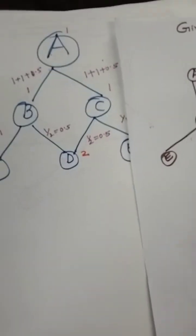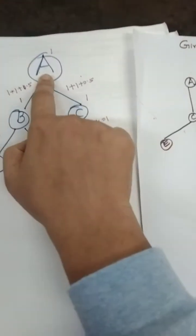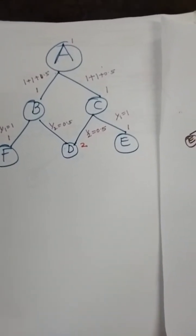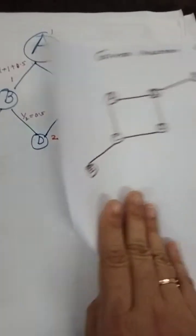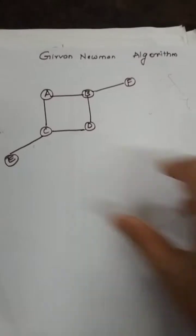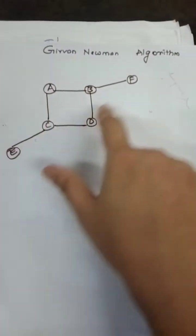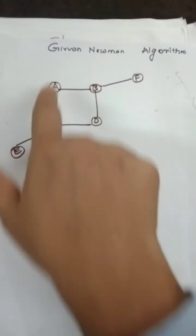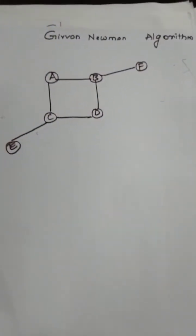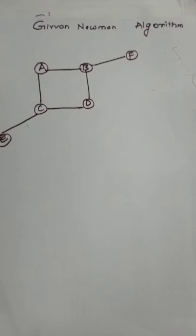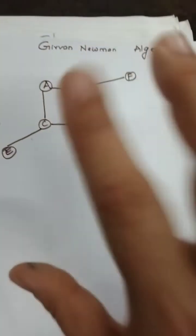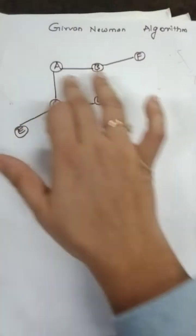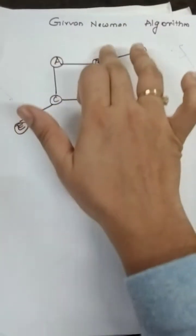To find the betweenness centrality of all the edges in the network, we have to consider each node and traverse the graph. Betweenness centrality of edge AB is the number of shortest paths passing through this edge. If you try to calculate the shortest paths between all different nodes, how many shortest paths pass through this particular edge — that is the betweenness centrality of edge AB. In other words, betweenness centrality of any edge is the number of shortest paths passing through that edge between any two vertices.